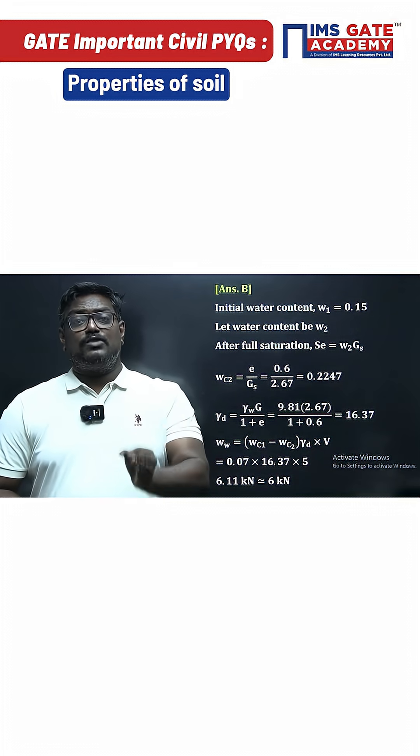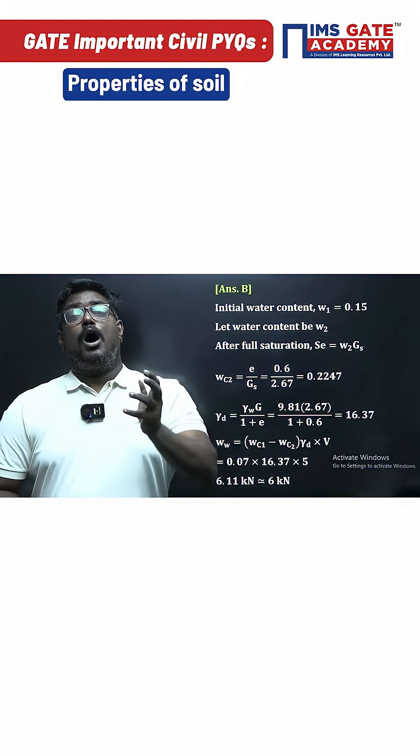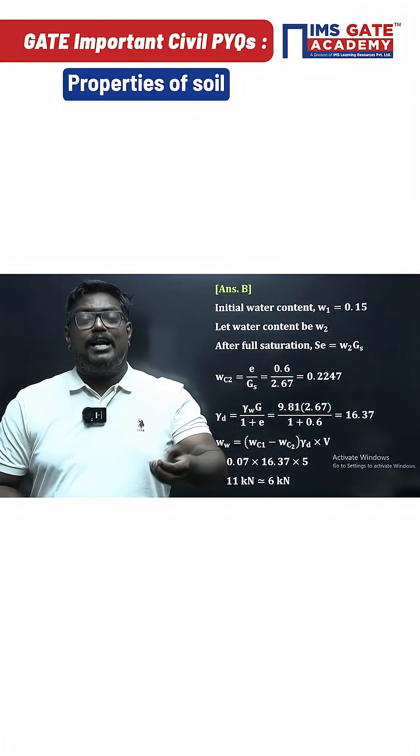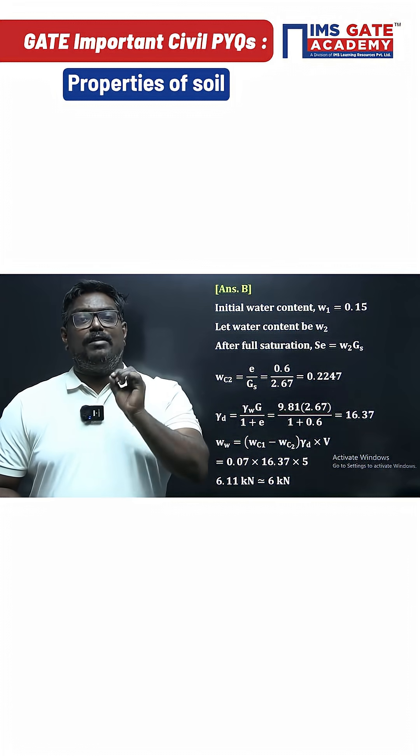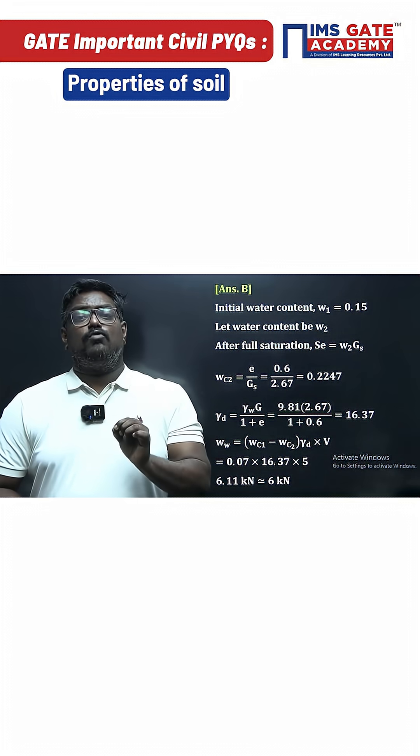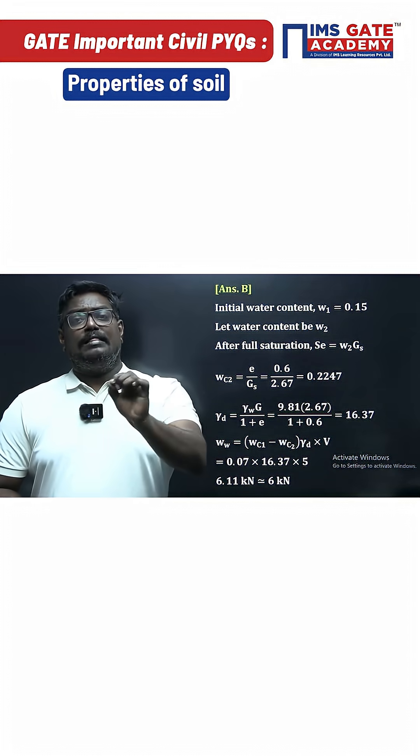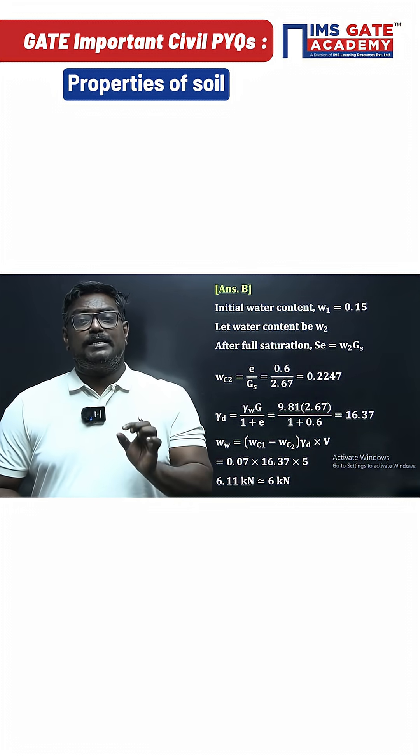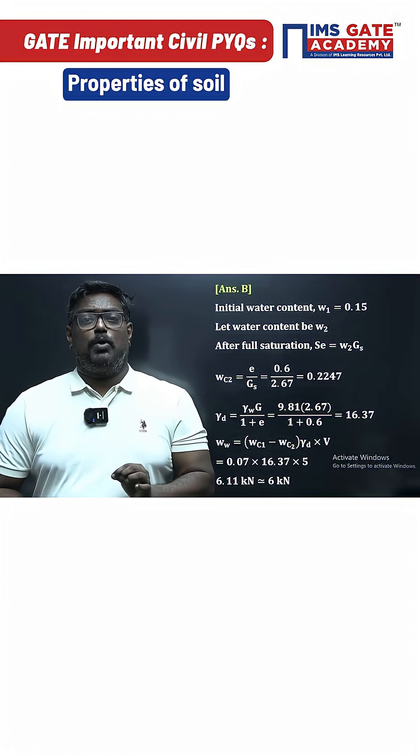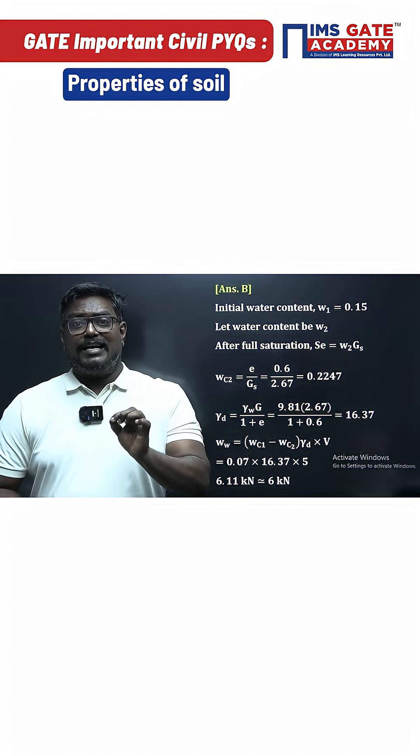So for the extra weight of water to be added, you can write gamma D times V times (water content 1 minus water content 2). Here for fully saturated it is 0.22. They have given the value as 15 percent which we can write as 0.15. And the volume is given as 5 meter cube.